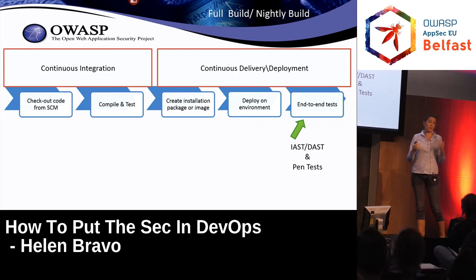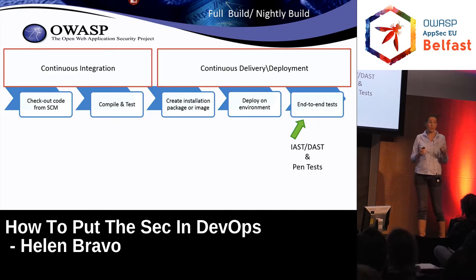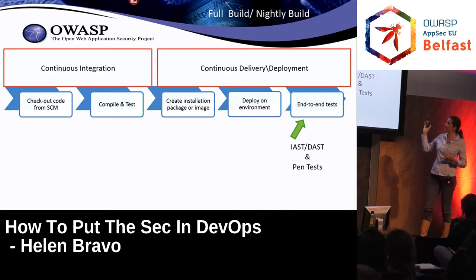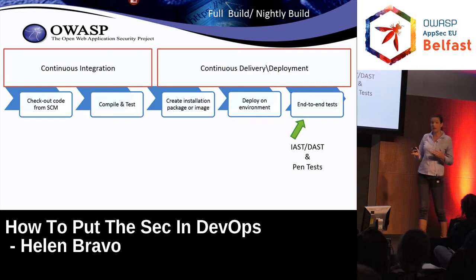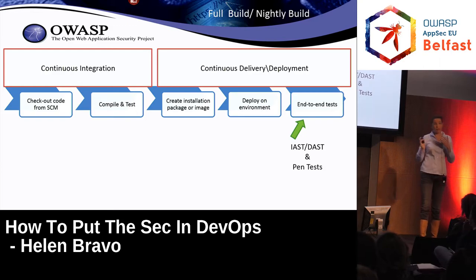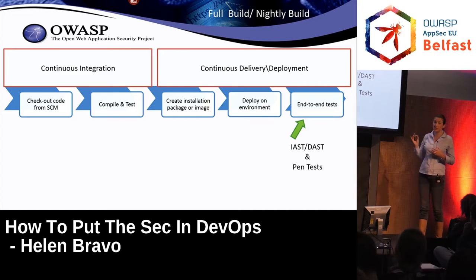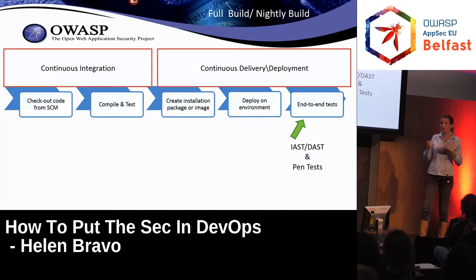The same goes for DAST and IAST. Both are somewhat time-consuming, but they can run aside of the process if they are not stopping it. At the end of the process, it's the final frontier before deciding to go to production or go back to development. So the important question is: what would you stop the process over? What finding from penetration testing, DAST, or IAST would make it a showstopper?